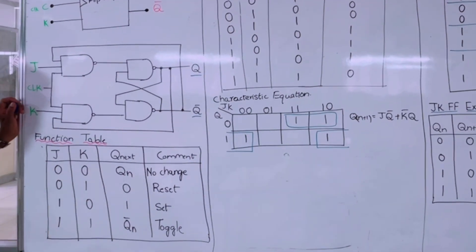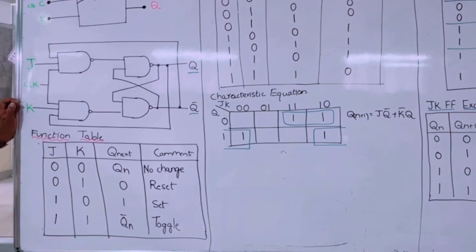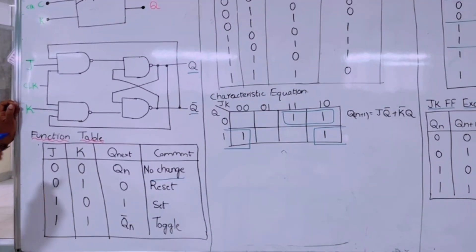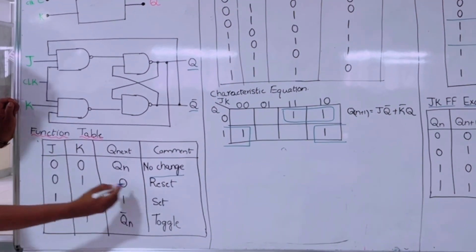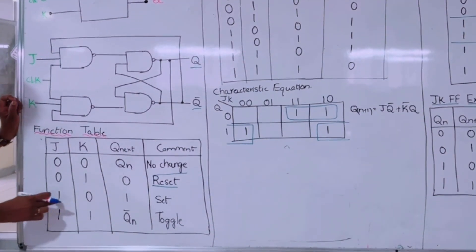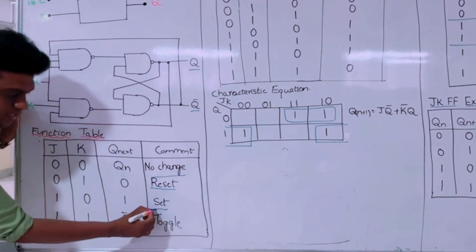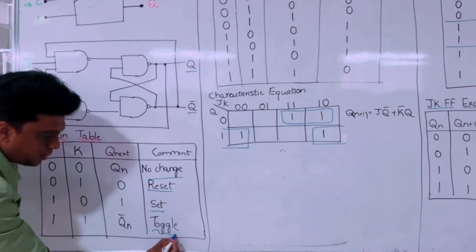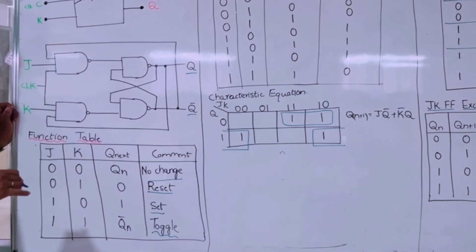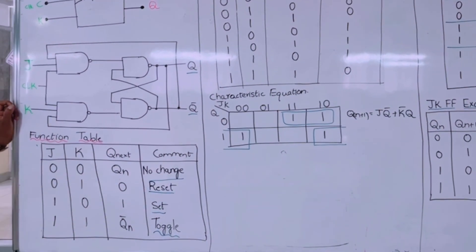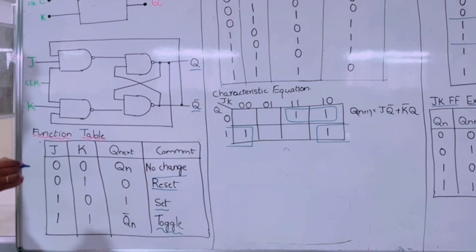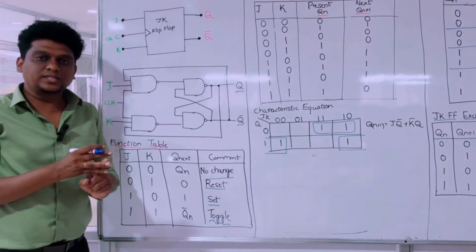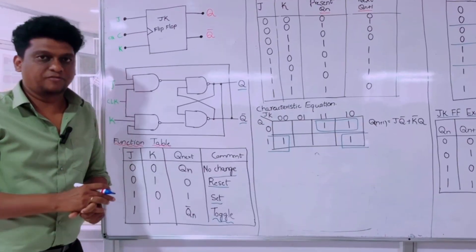In the JK flip-flop function table, J and K are the inputs. For input 0,0 the condition is no change — similar to the SR flip-flop. For input 0,1 it is the reset condition, output goes to 0. For input 1,0 it is the set condition. For input 1,1 it is the complement — also called the toggle state. When the input is 1 and present output is 1, output becomes 0; when present output is 0, output becomes 1. The JK flip-flop performs three functions: setting to 1, resetting to 0, and complementing.